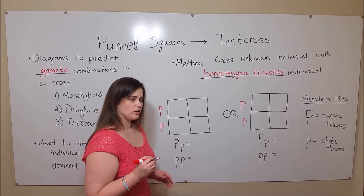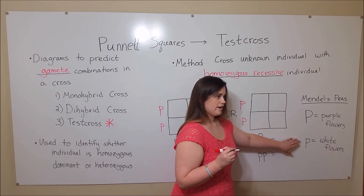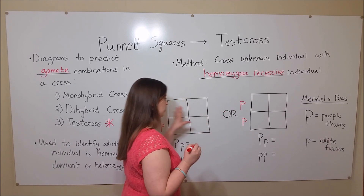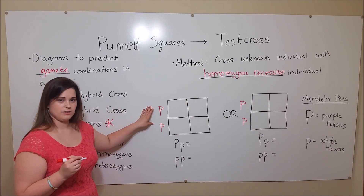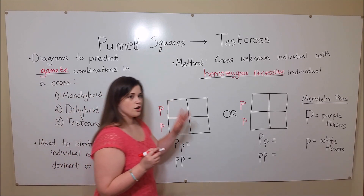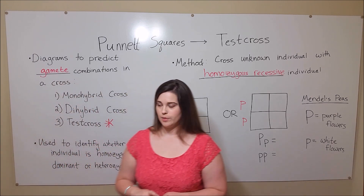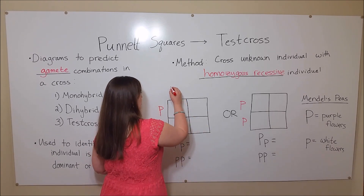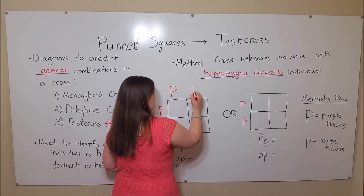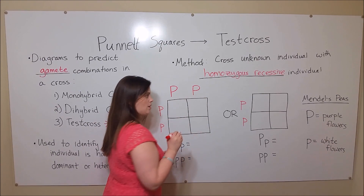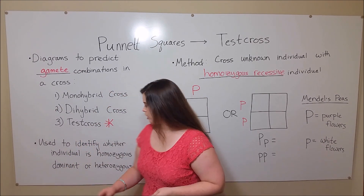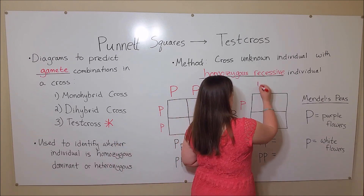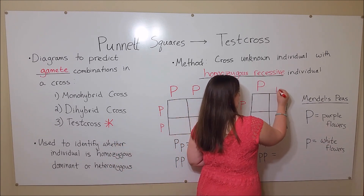Since this individual is recessive for white flowers — two alleles for the recessive white flowers — the recessive allele is all that they have to give away to their offspring. This unknown individual, however, may be homozygous dominant with two alleles for the dominant purple flower, or perhaps they are heterozygous, meaning they would have one dominant allele and one recessive allele.